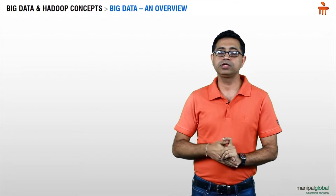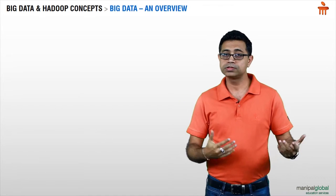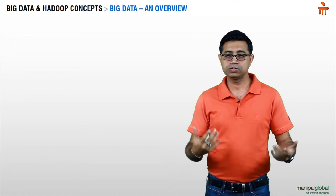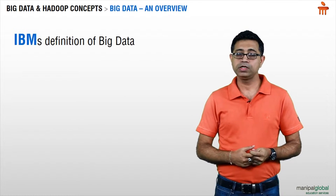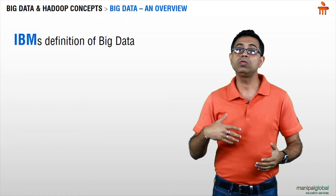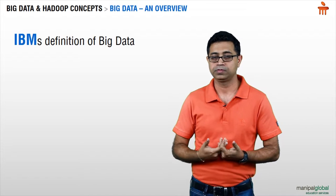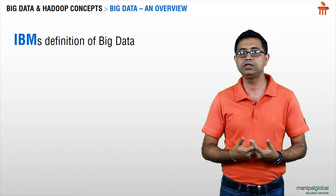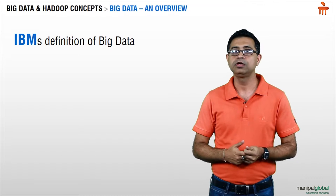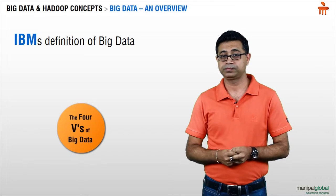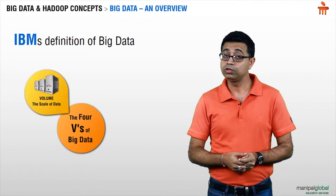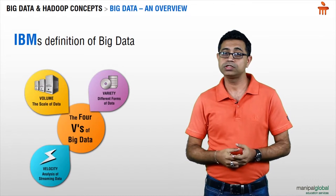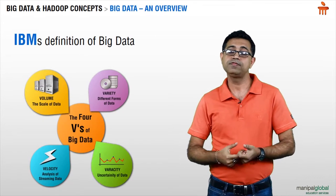At the same time, while Yahoo was working on the Hadoop implementation and Google was developing the white papers, IBM also jumped into the frame. It created its own definition of big data and defined the concept in four different parameters: volume, variety, velocity, and veracity.